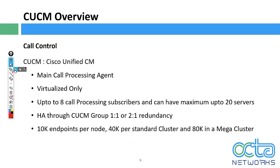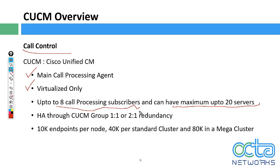Some additional features of CUCM: it is called a Call Controller and the main call processing agent. It is virtualized only - from version 10 onwards. You can have up to eight call processing Subscribers and a maximum of up to 20 servers in a cluster. Not only the call processing servers are part of the cluster - the DHCP server is also very important to dynamically provide IP addresses to IP phones and PCs via the data VLAN. You also have a TFTP server, NTP server, and MOH - Music on Hold server.